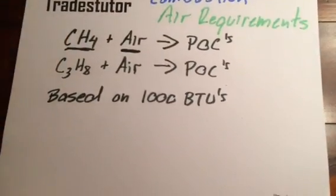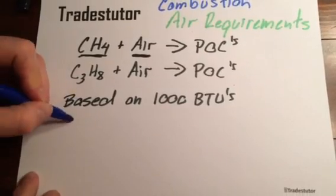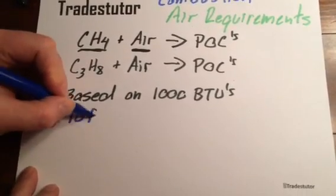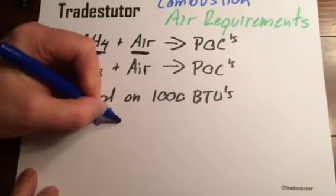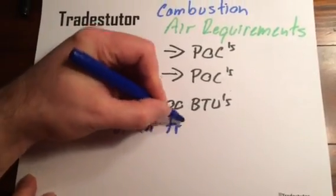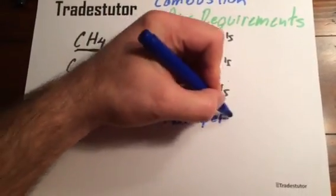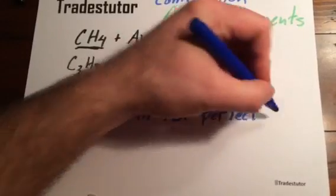So, the idea is for every 1000 BTUs, what you need is 10 cubic feet of air for combustion. Now, that's actually perfect combustion. Okay?